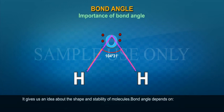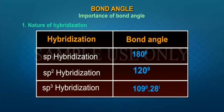Importance of Bond Angle: It gives us an idea about the shape and stability of molecules. Bond angle depends on: 1. Nature of hybridization.